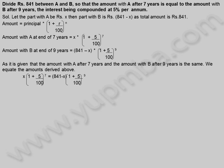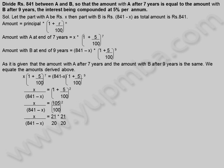X into 1 plus 5 by 100 whole power 7 is equal to 841 minus X into 1 plus 5 by 100 whole power 9. X by 841 minus X is equal to 1 plus 5 by 100 whole power 9 divided by whole power 7, which simplifies to 105 by 100 whole power 2, equal to 21 by 20 into 21 by 20.